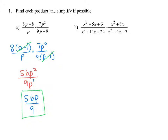Let's do part b. We want to make sure we factor first each numerator and denominator, and then we can divide out any common factors. The numerator can be factored into x plus 3 times x plus 2, looking at the factors of 6 that add up to 5. The denominator: factors of 24 that add up to 11 are 8 and 3, so the factors are x plus 8 and x plus 3.